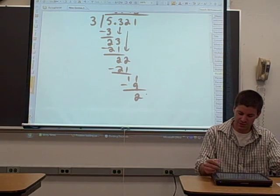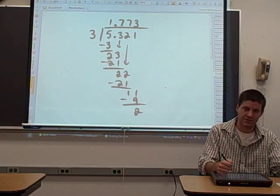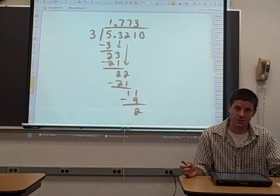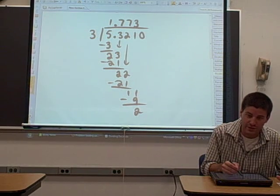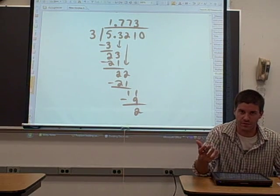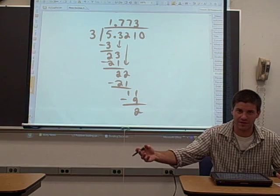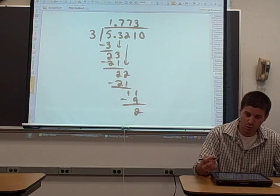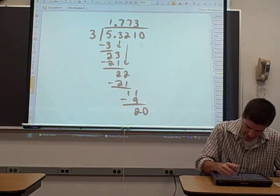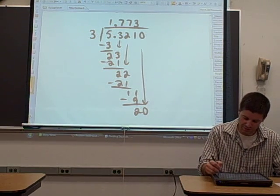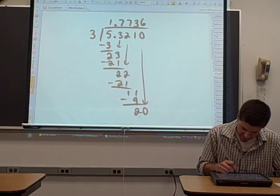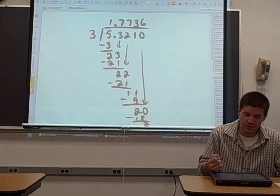Now what we can do with decimals is we can, if we want to continue this problem since we have this remainder, what we could do is add a 0 up here in our dividend. The reason we can do that is because the number 5.321 is the same exact number as 5.3210. You might remember from your study of decimals that you can add 0s to the end of any decimal and it's still the same number. So if we wanted to, we could continue this problem. We could add a 0 to the end of our decimal, bring that 0 down and continue the long division. How many times does 3 go into 20? 6 times. Multiply the 3 times the 6, we get 18. Subtract and we get 2. We have another remainder.